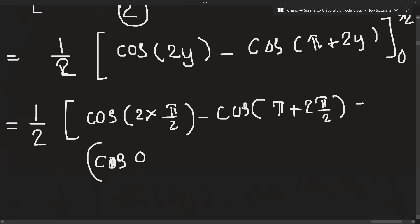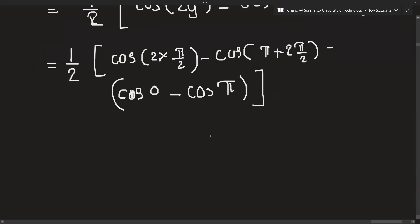Minus, okay I will just put like that, cos pi, right? This 2y will get 0 so I will not write again.